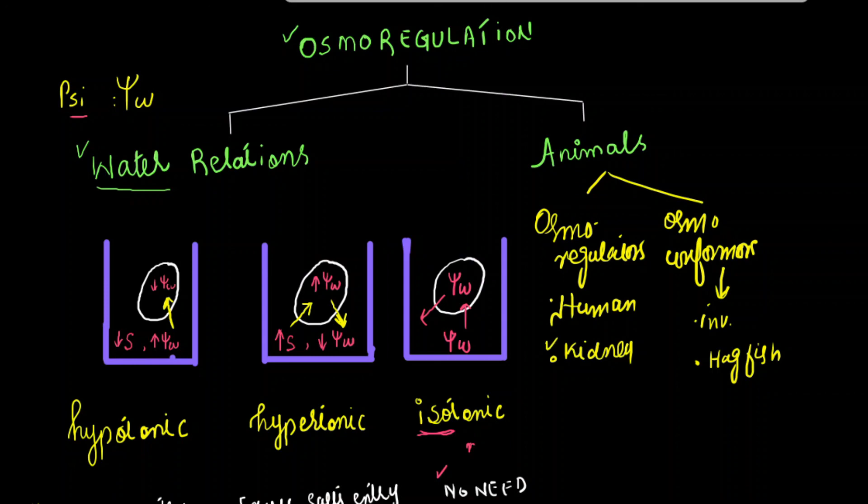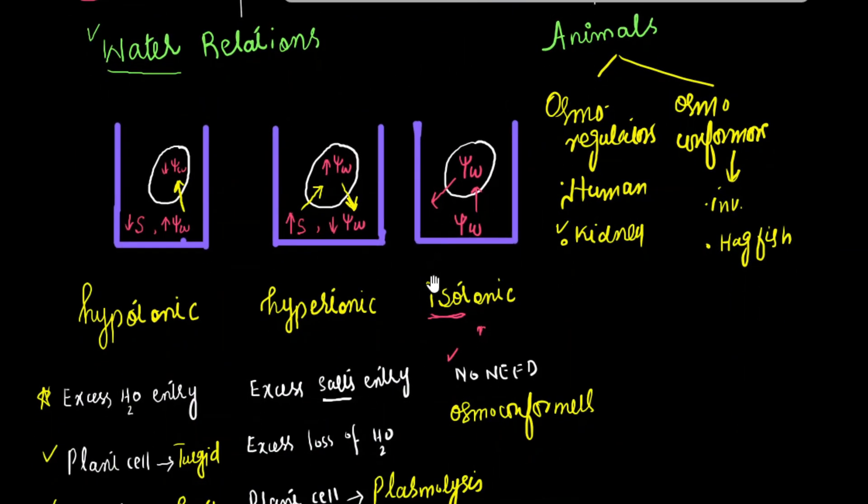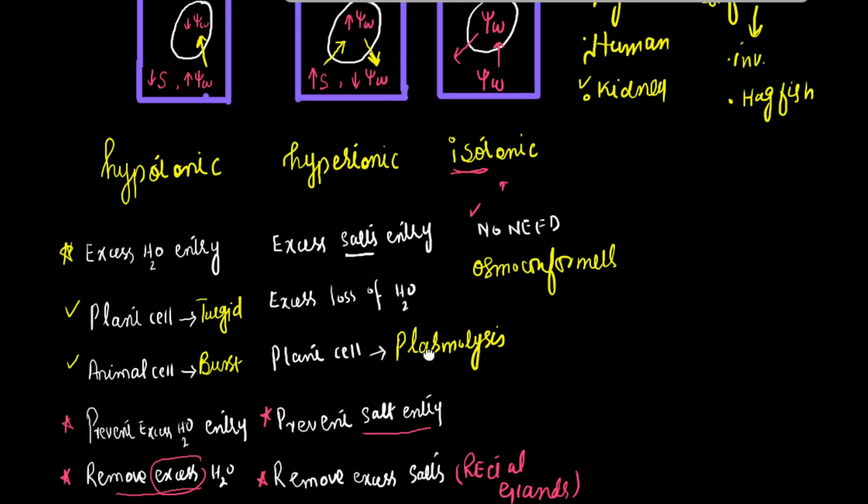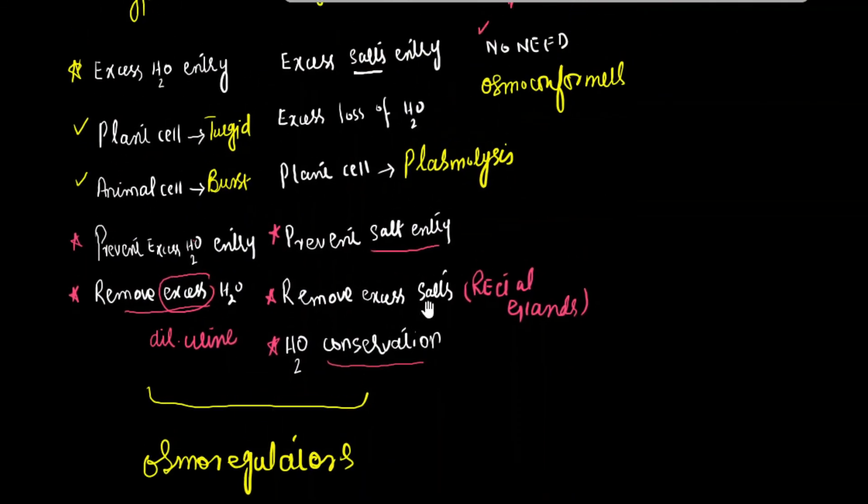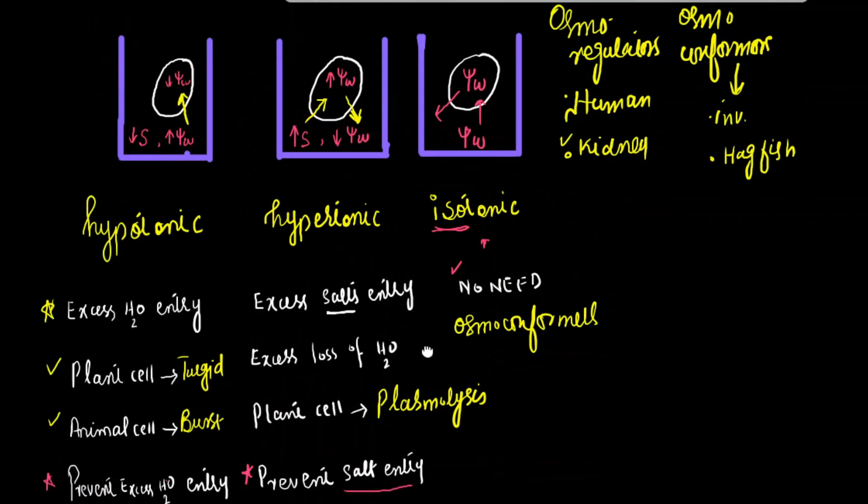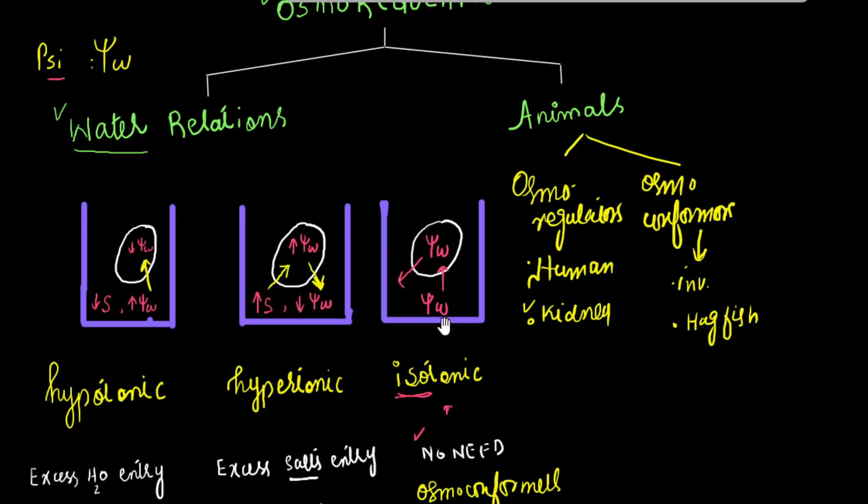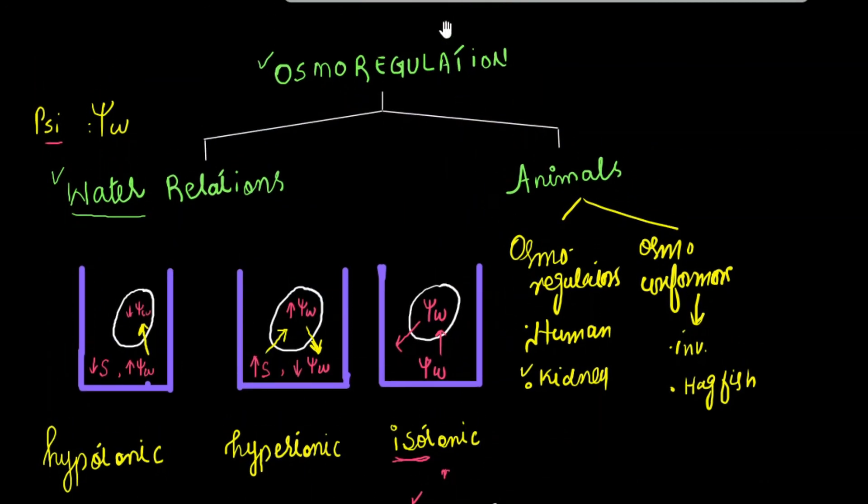So that was a detailed lecture about osmoregulation, about different types of environments, and which environments require osmoregulation by osmoregulators and which environment does not need osmoregulation, that is isotonic environment where osmoconformers live.